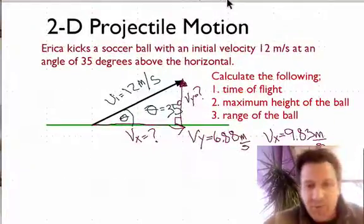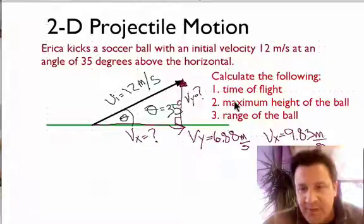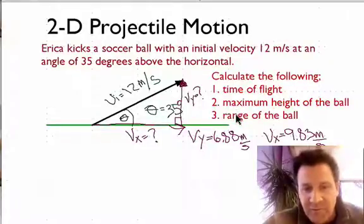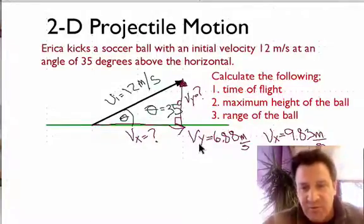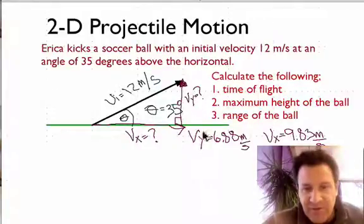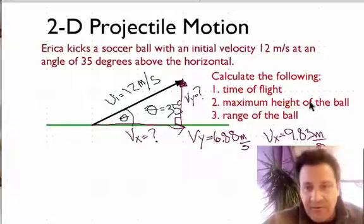In this video, part two of two-dimensional projectile motion, we're going to go through and try to answer these questions: time of flight, maximum height of the ball, and range of the ball. In part one, we took our initial velocity of 12 meters per second at 35 degrees and broke it down into component velocities. We found the initial velocity in the y direction was 6.88 meters per second and in the x direction was 9.83 meters per second.